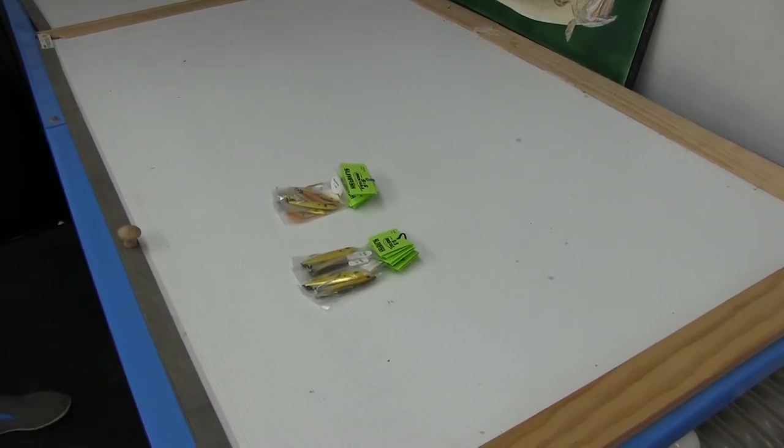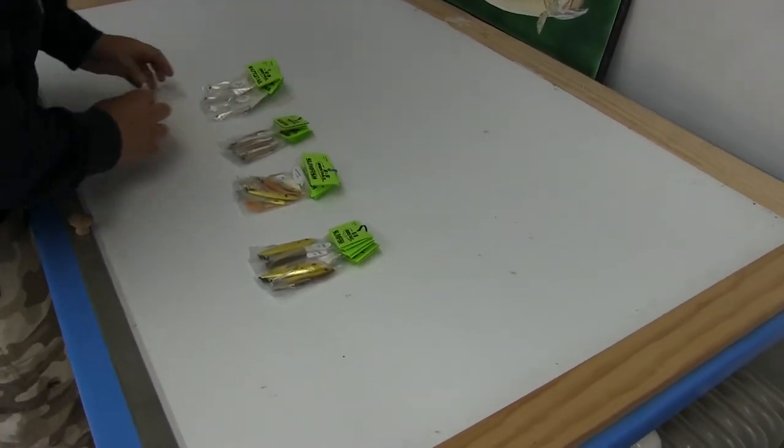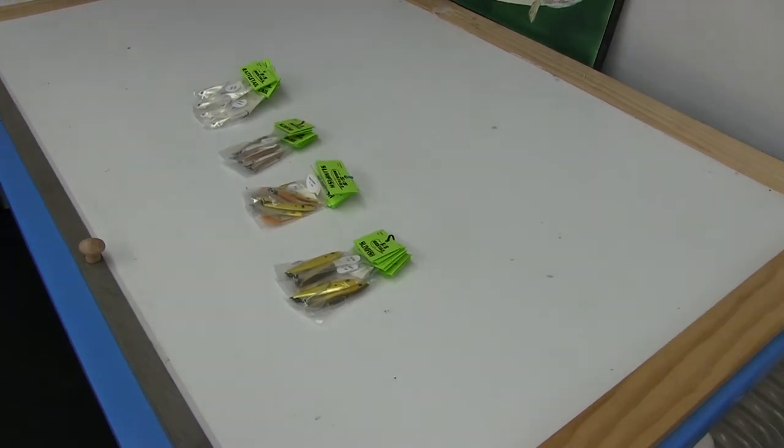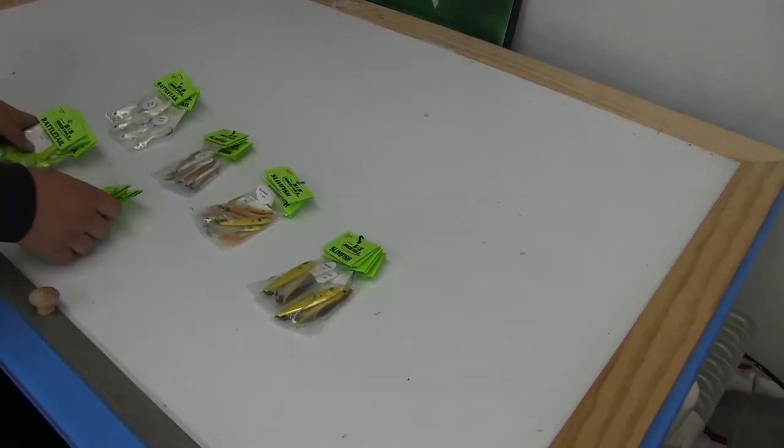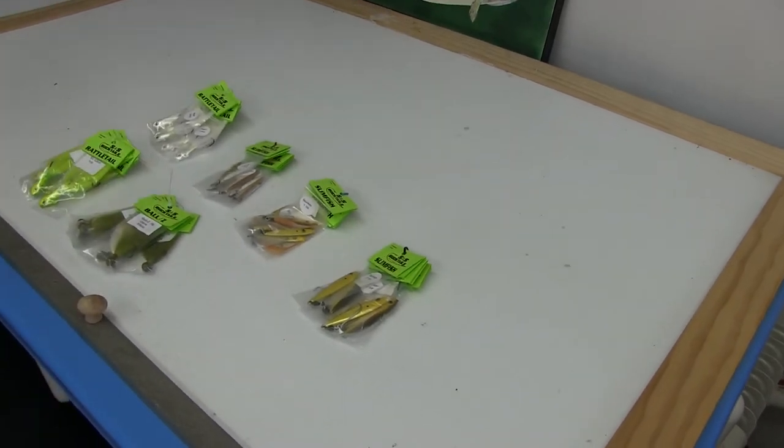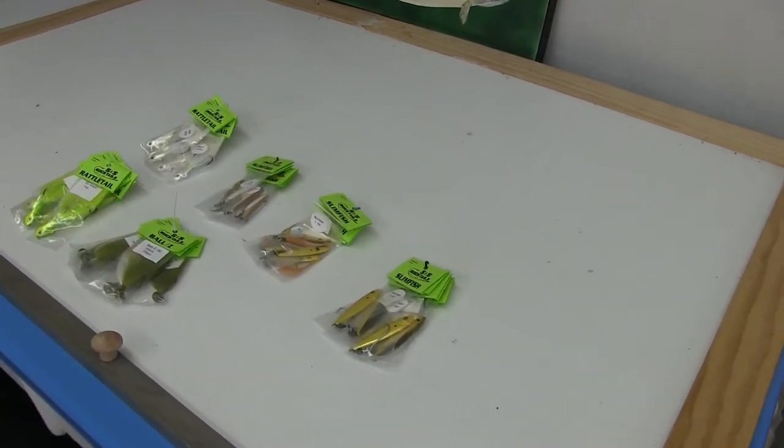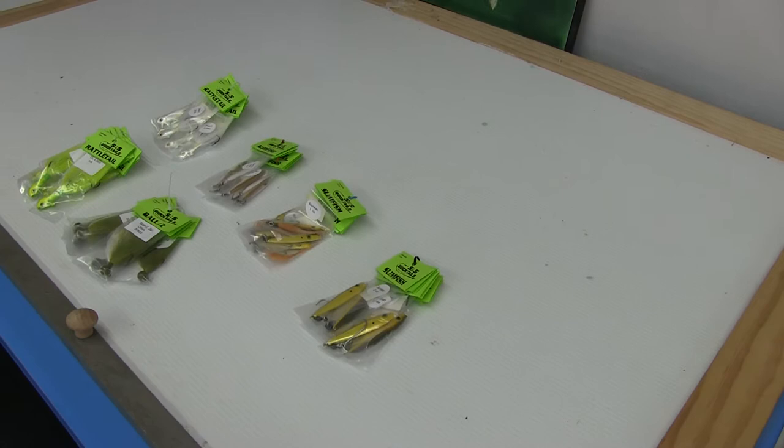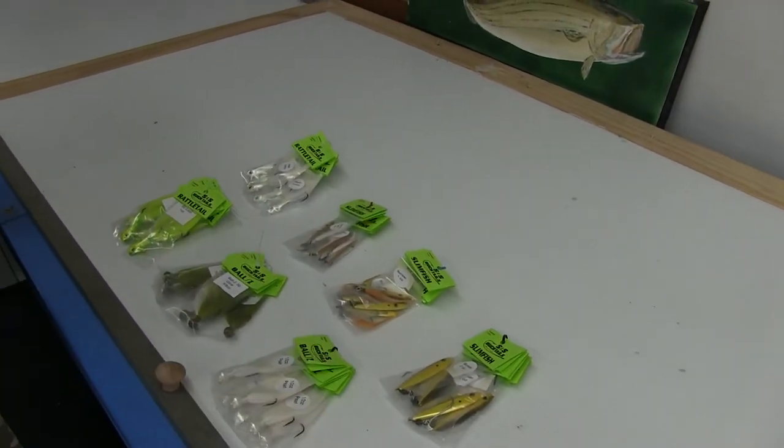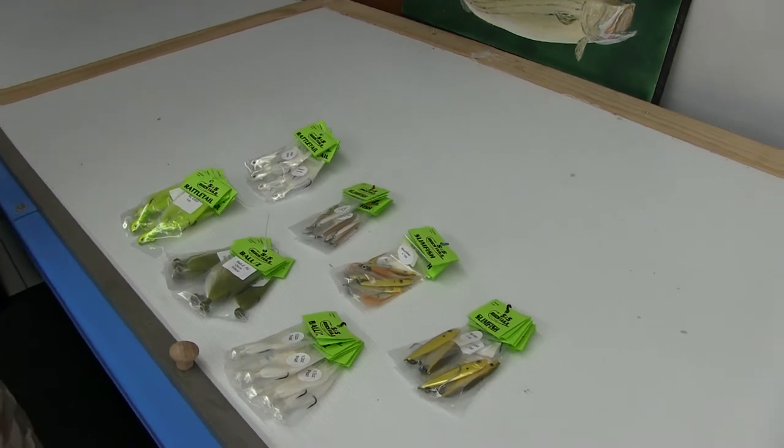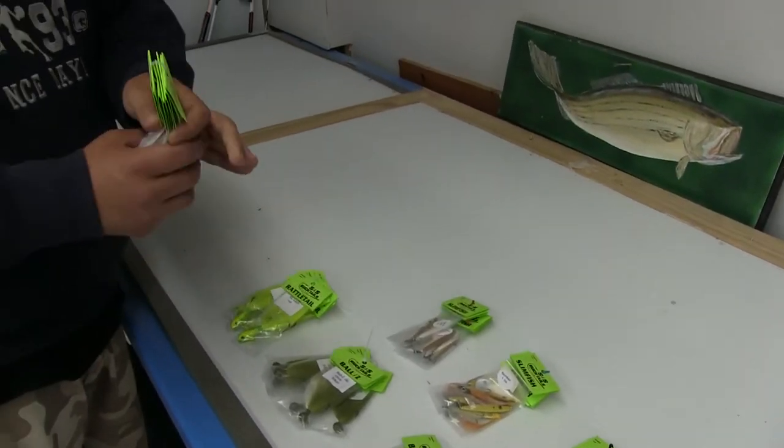Down here at Viking Outfitters they just got a really cool line of S&S handmade lures. They've got everything from slim fish to rattletail which does in fact rattle. Let me show you some.